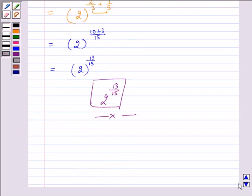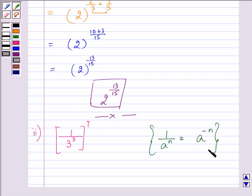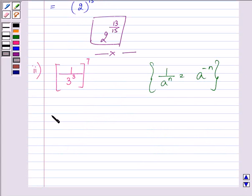Proceeding on with the next part, we're given 1 divided by 3 to the power 3 bracket. So we can write 1 by 3 raised to the power 3 as 3 to the power minus 3, to the power 7 as already given to us.